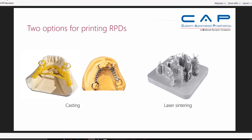We really have two options when it comes to removable partial dentures. Designing in 3Shape or an exocad system, then going to 3D printing and then casting your partials is quite common today. In addition to that, there's laser sintering or SLM technology which goes directly from design to a laser-sintered chrome cobalt partial. Both of these technologies are somewhat viable and each has its own challenges.